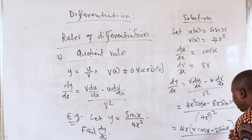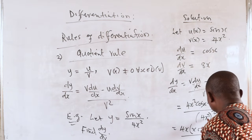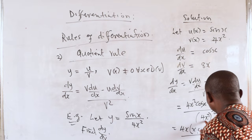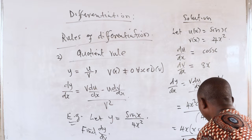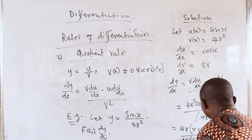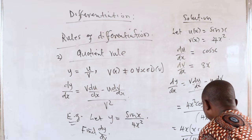everything divided by v². If you square it, this is 16x⁴, so this becomes 4x into 4x³.